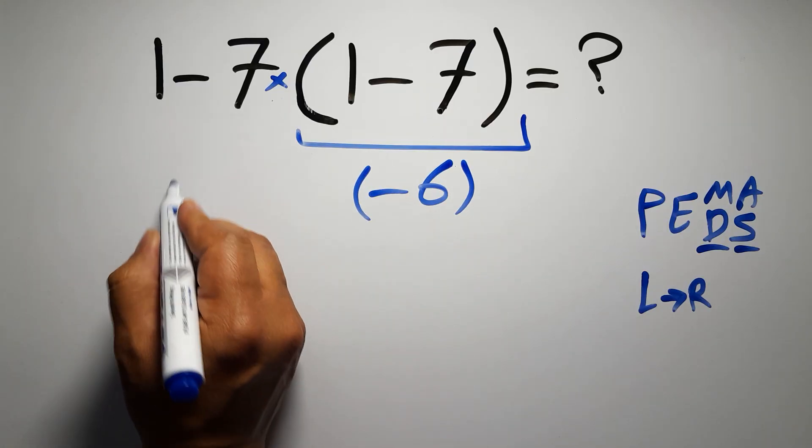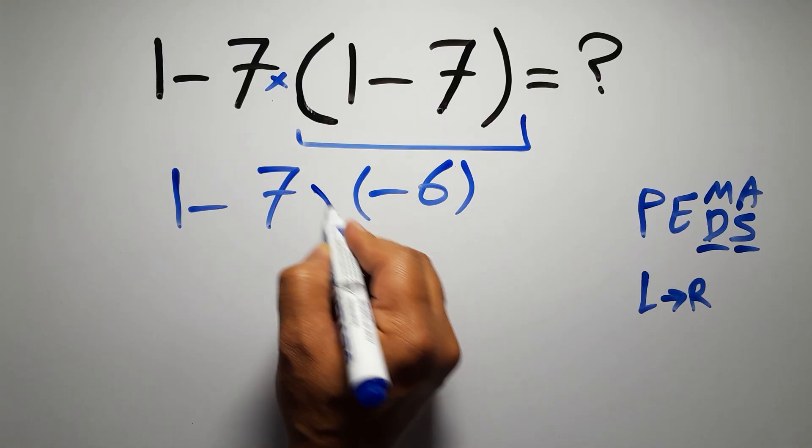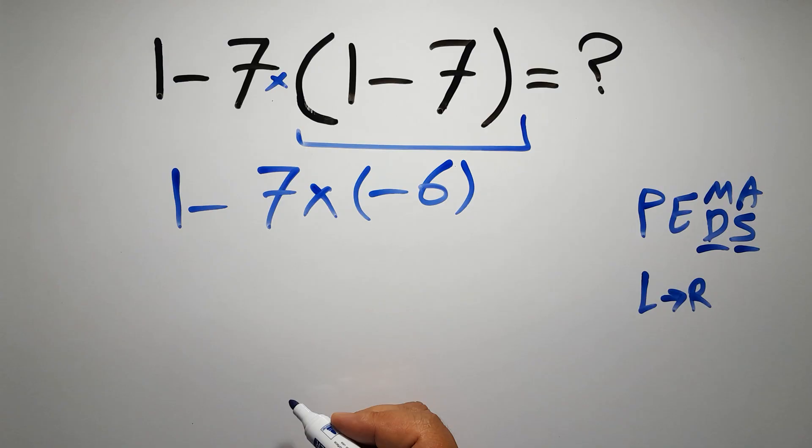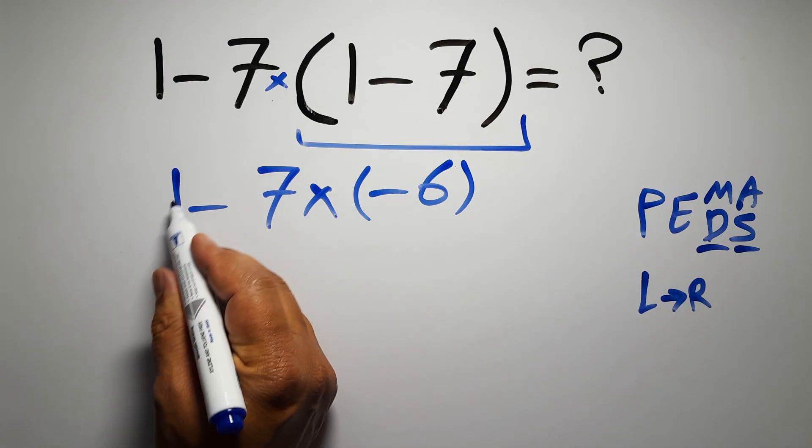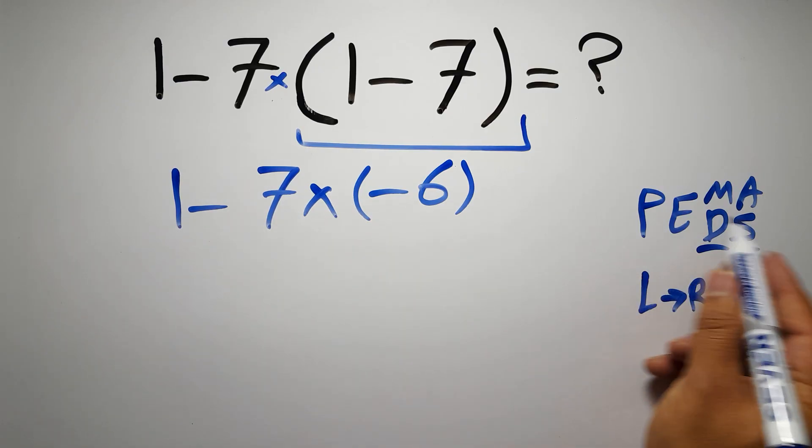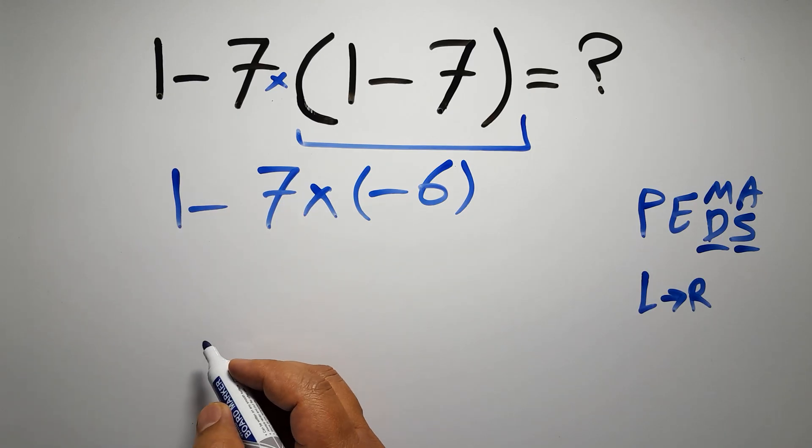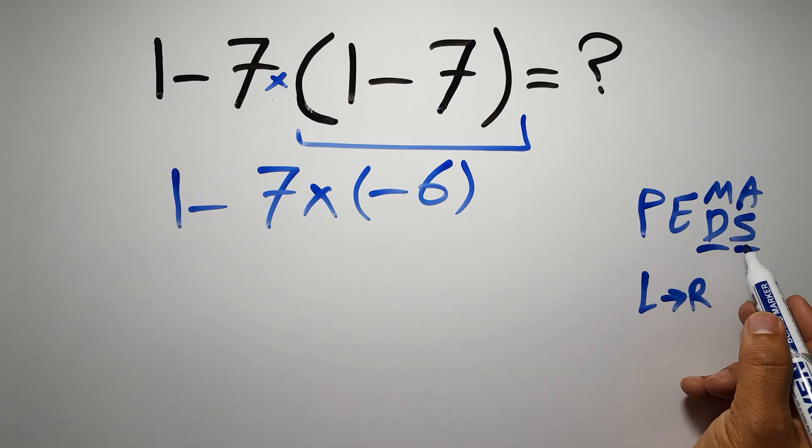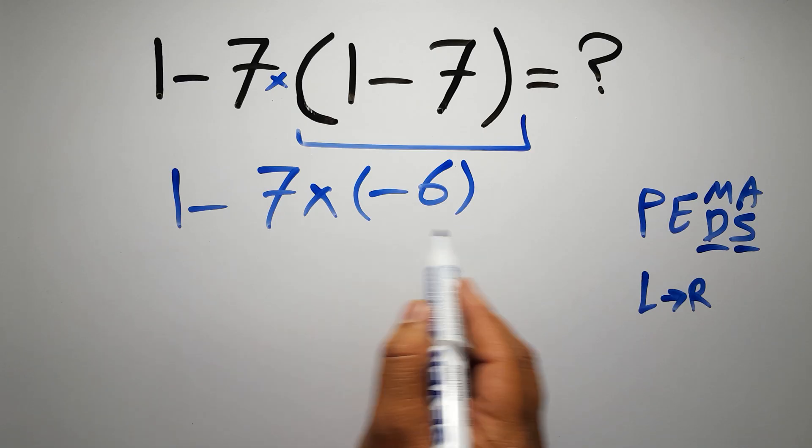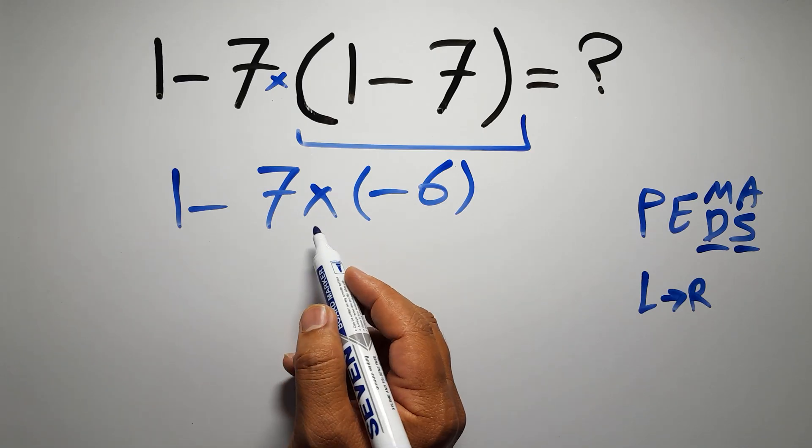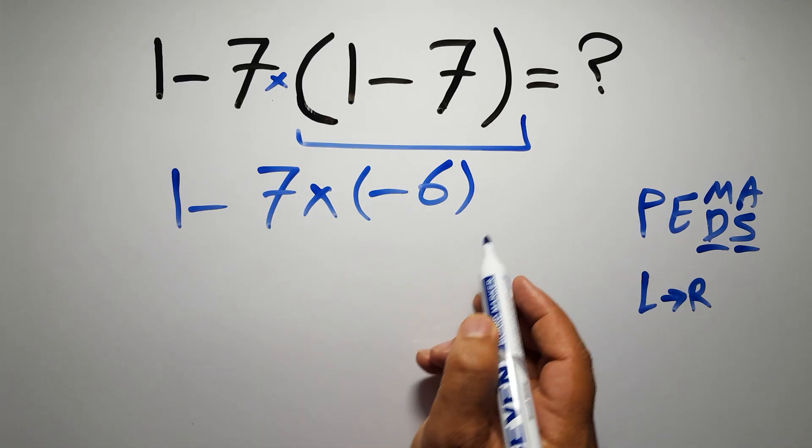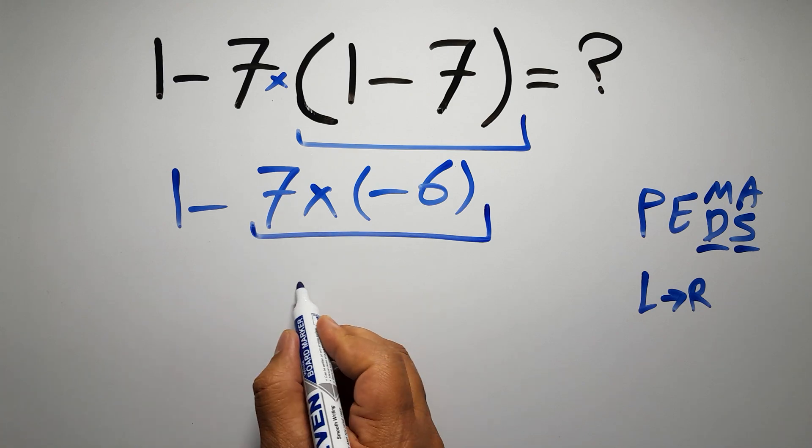So 1 minus 7 times negative 6. Now we have 1 subtraction and 1 multiplication. According to the PEMDAS, multiplication has higher priority than subtraction because multiplication comes before subtraction. So here first we have to do this multiplication. 7 times negative 6 gives us negative 42.